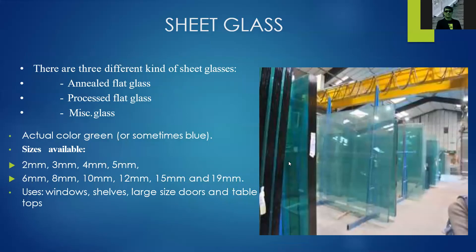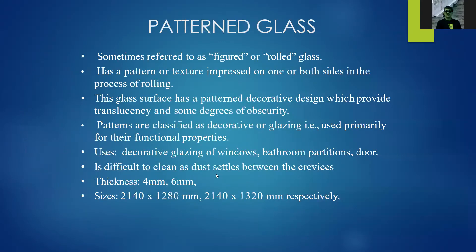Sheet glass includes annealed flat glass, processed flat glass, and miscellaneous glass. Its actual color is green but sometimes appears blue. Sizes range from 2 millimeters up to 19 millimeters in thickness. Uses include windows, shelves, large doors, tabletops, and similar applications.